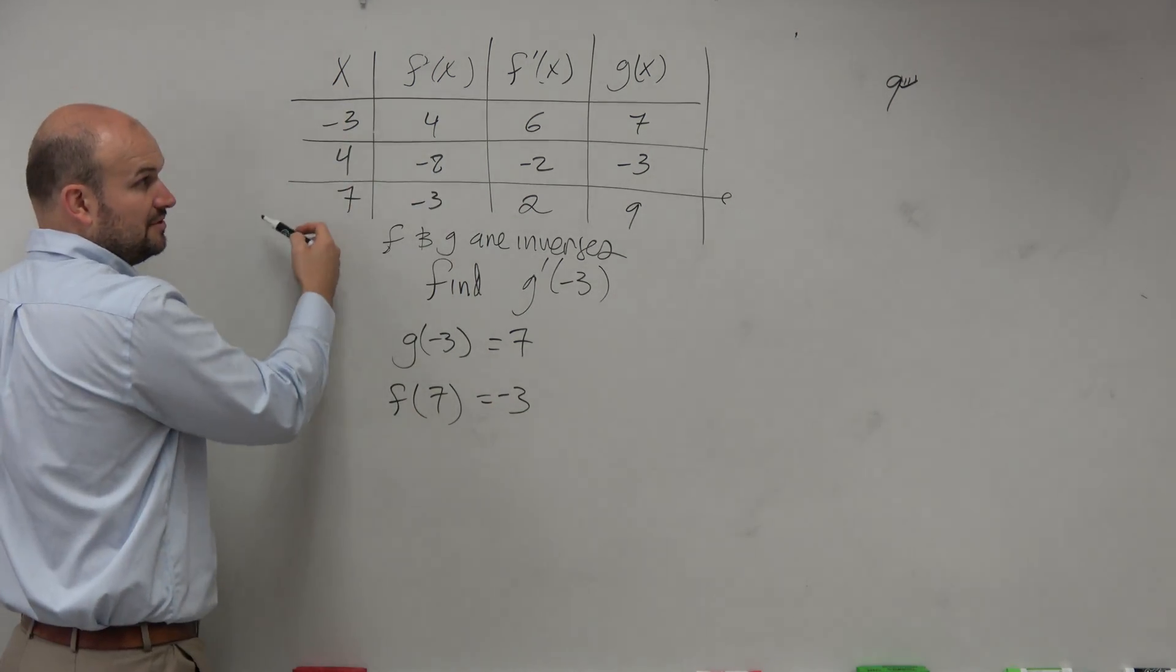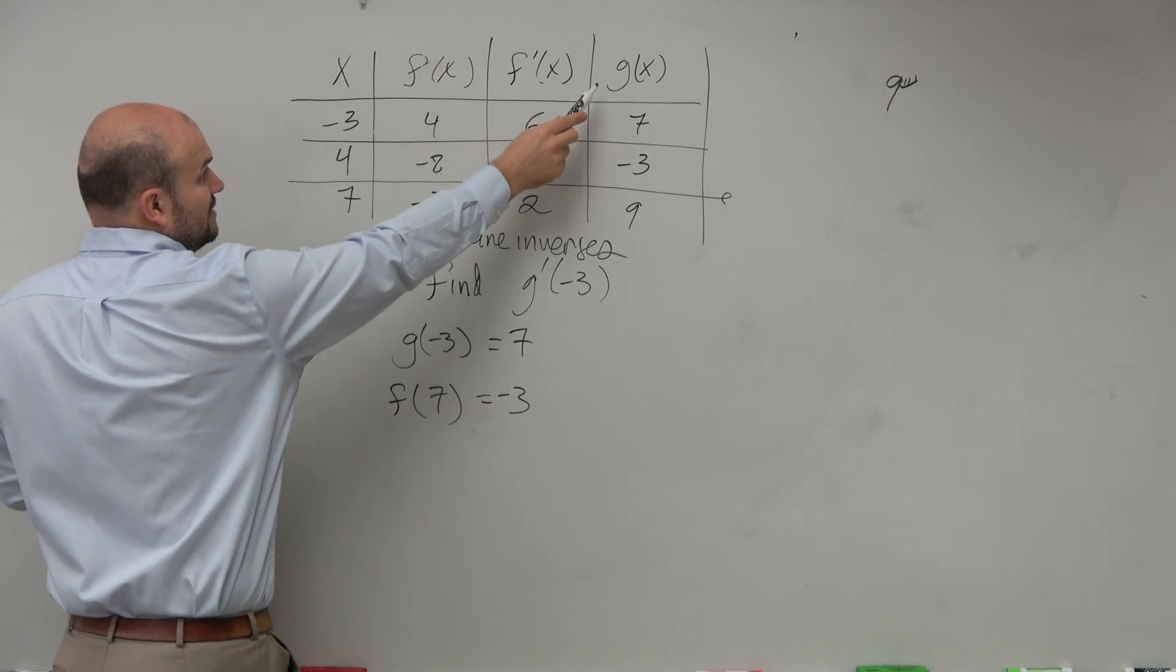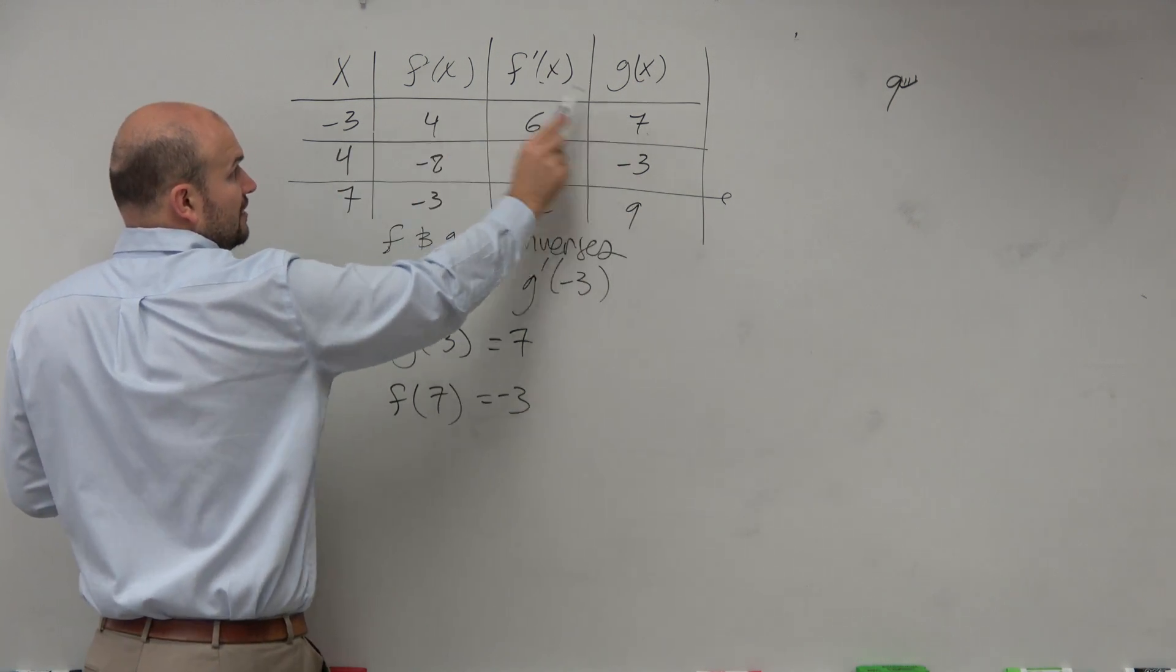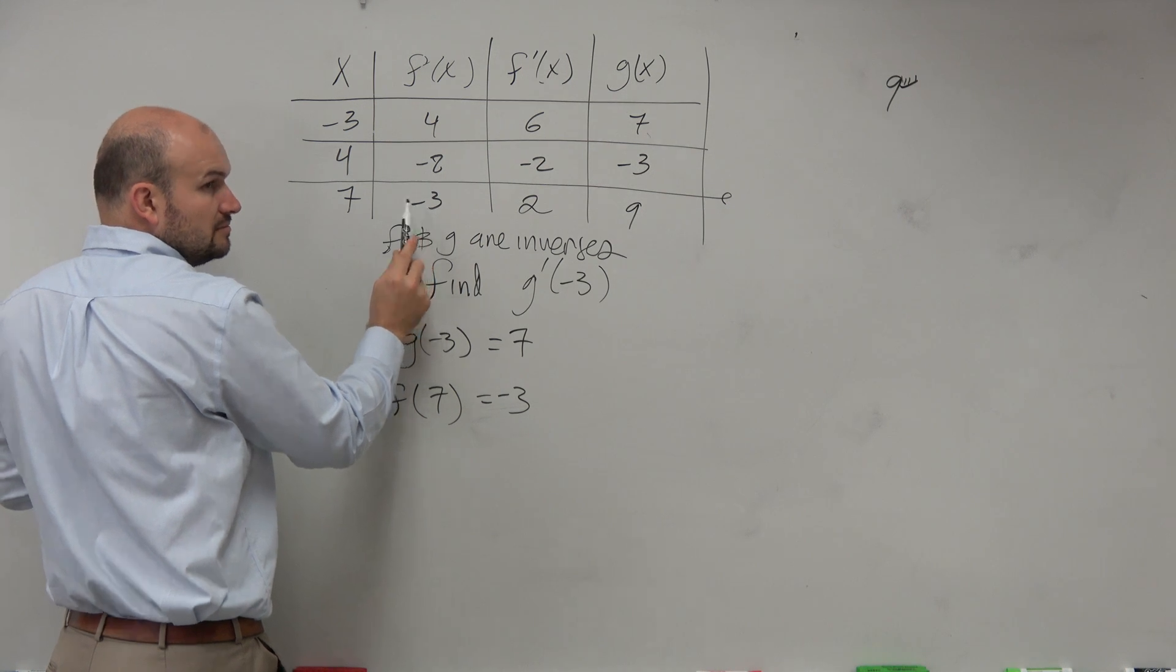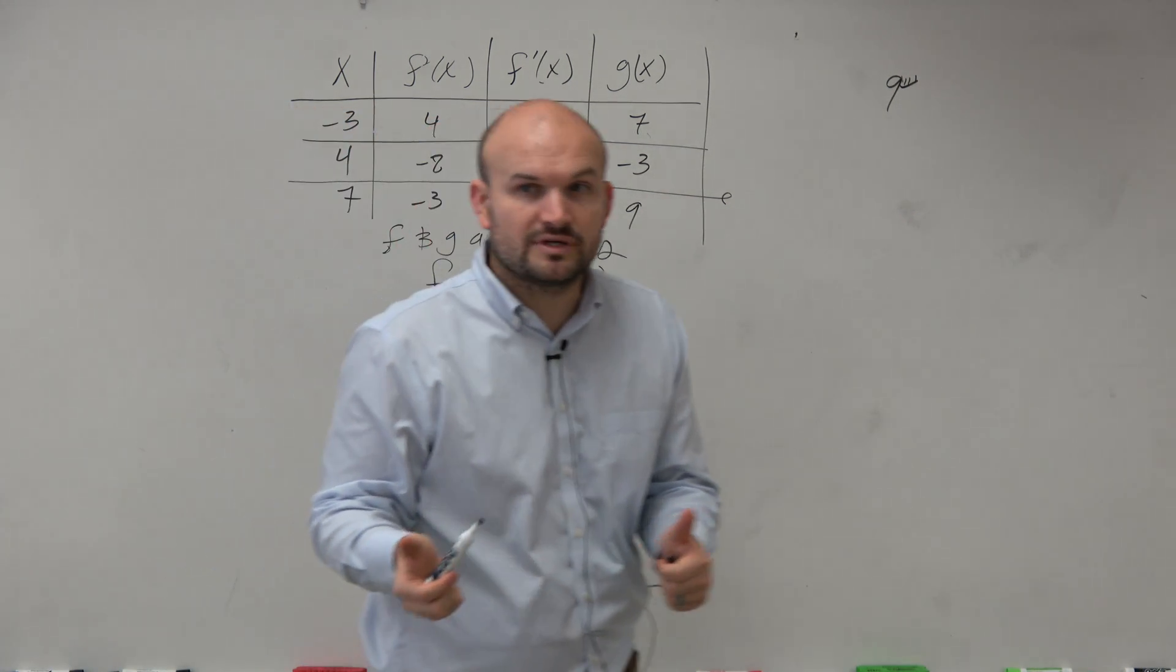You guys see how that works on the table? g of negative 3 is 7. f of 7 is negative 3, right? OK. So good. So there's nothing wrong with our table. It's working fine.